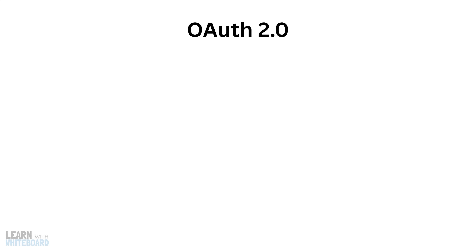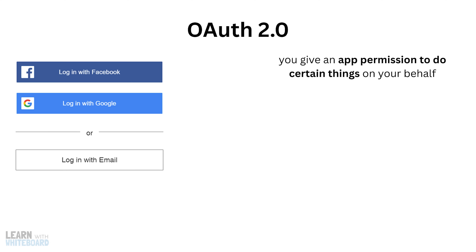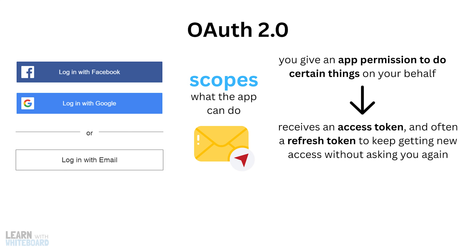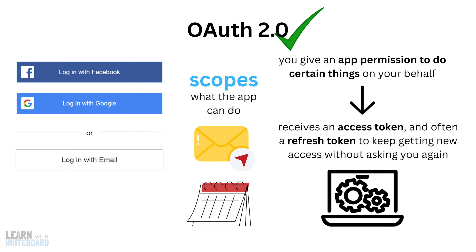Next, we have OAuth 2.0, which is the most common standard you'll see today. If you've ever clicked 'Sign in with Google' or 'Log in with Facebook' on any website, that's OAuth working in the background. You give an app permission to do certain things on your behalf, and the app then receives an access token, and often a refresh token to keep getting new access without asking you again. The real power of OAuth is in scopes — a scope decides what the app can do, maybe read your emails but not send them, or see your calendar but not delete it. That fine-grained control is why OAuth is the go-to choice for apps that connect to user accounts, and it's essential for most modern integrations.